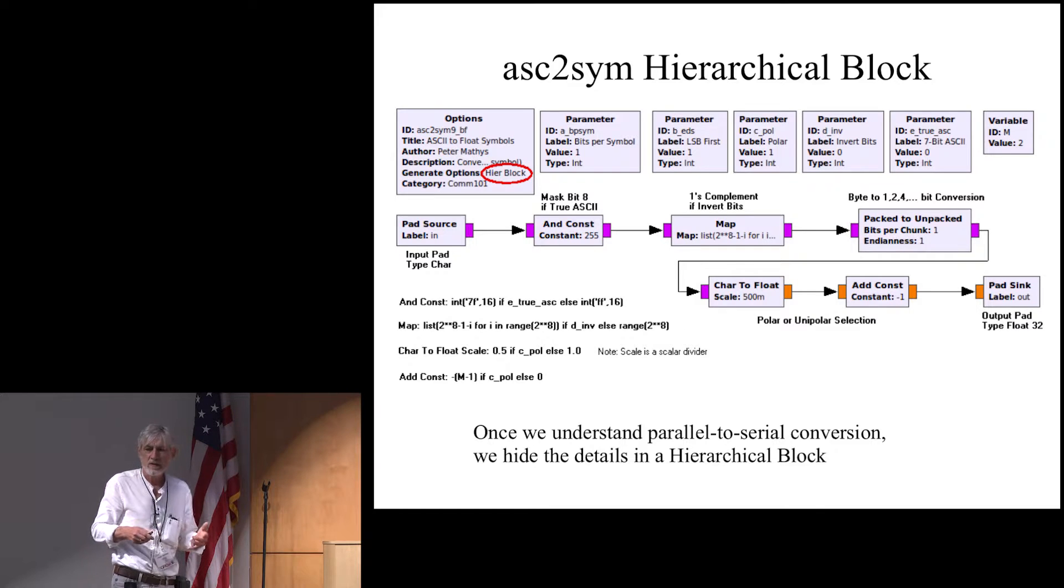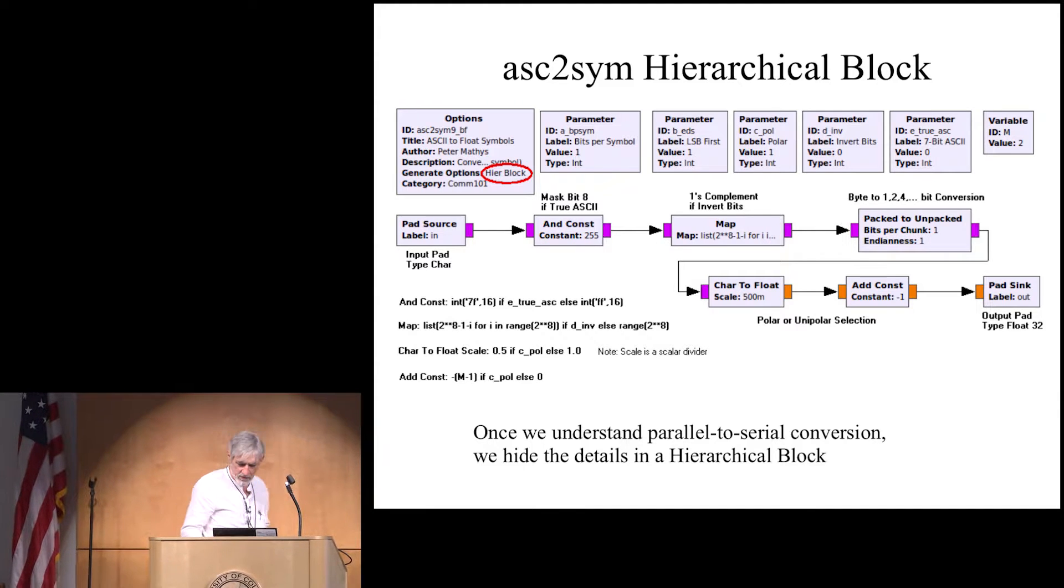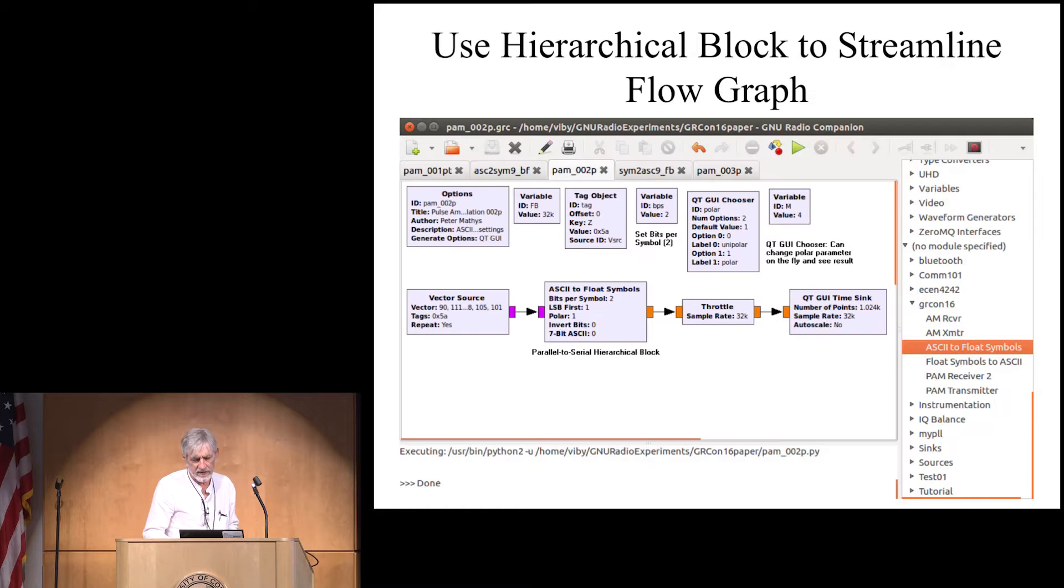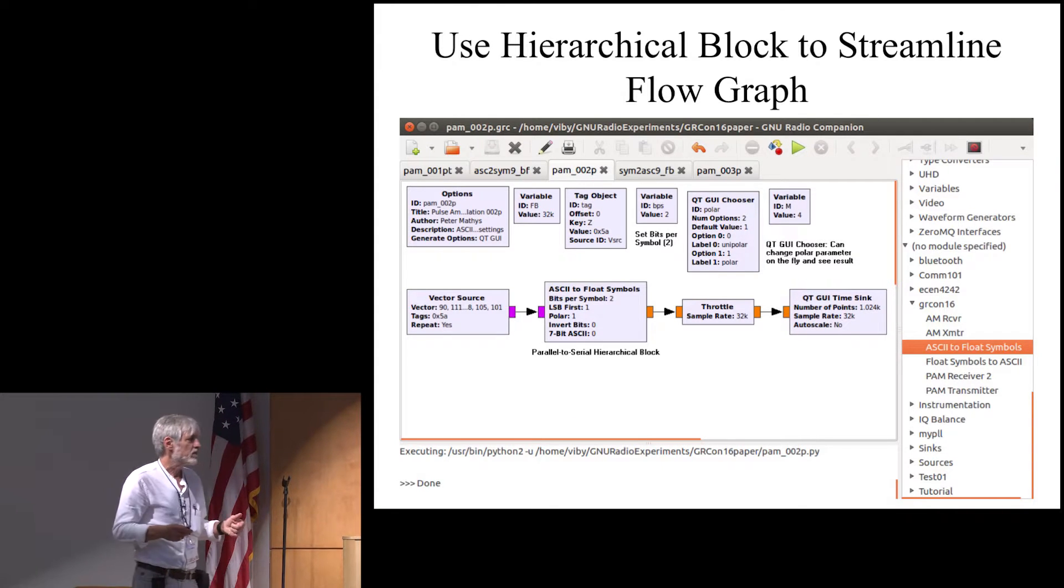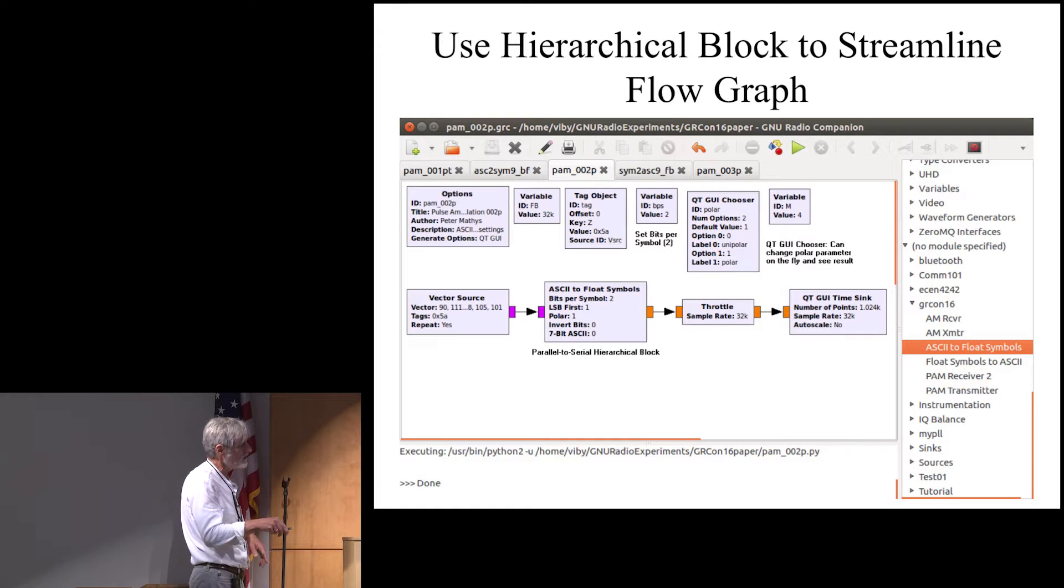But the main point is you put in features in there that you might want to use and that you then have available as parameters. So if I make this now into a regular block, you compile it and then you have to basically get out of the GNU radio companion and go back in again and then it's available as a regular block. You can actually see down here where it is available, I believe.